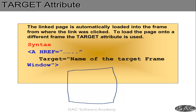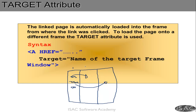Let us assume I have three frames: frame 1, frame 2, and frame 3. In frame 1 I have hyperlink 1, hyperlink 2, and hyperlink 3. When I click hyperlink 1, I want the page to display in frame 1; when I click another link, the page should display in frame 2 or frame 3. To do that you use the attribute called target. When you say target equals to frame 2, that link opens in frame 2. When you say target equals to frame 3, it opens in frame 3. That is the concept of target.